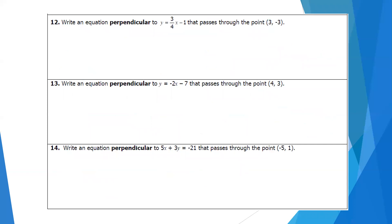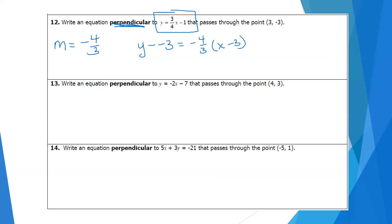The next three are similar, except these lines need to be perpendicular. The only difference is that instead of using the same slope, I need the opposite reciprocal slope. For the given line y equals three-fourths x minus 1, the slope is three-fourths. My line needs to be perpendicular, so my slope is negative four-thirds. Plug in the point using point-slope form with slope negative four-thirds. Distribute and subtract 3 to get y equals negative four-thirds x plus 1.